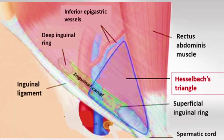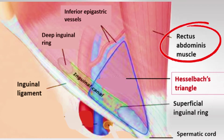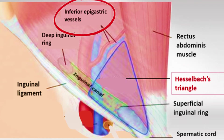The area has three sides, which is why it's a triangle. On the bottom side we have the inguinal ligament, on the medial side we have the rectus abdominis muscle, and on the lateral side we have the inferior epigastric artery.